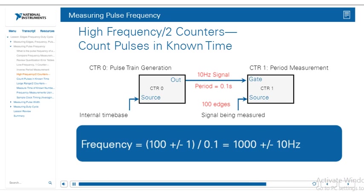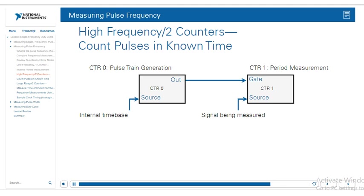To recap: counter zero creates the pulse train generation, and counter one makes the period measurements. The signal you want to measure goes into counter one, and counter zero is automatically set up for you in the DAQmx API. Using the two counters, it will generate and calculate the frequency for you.